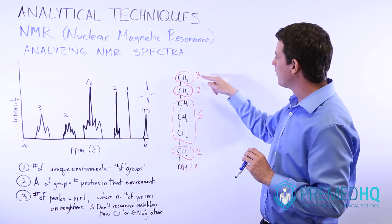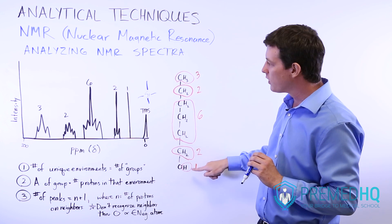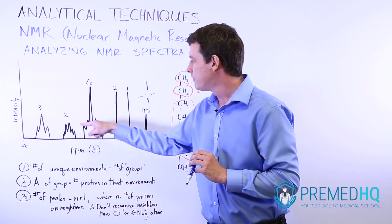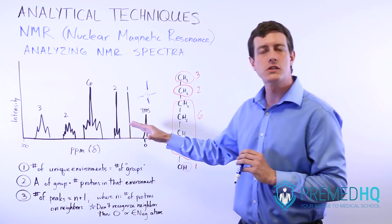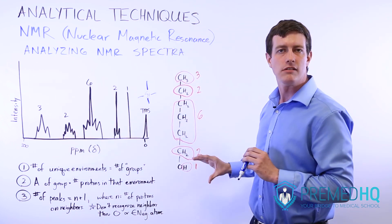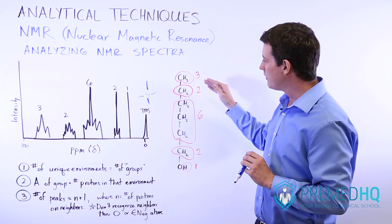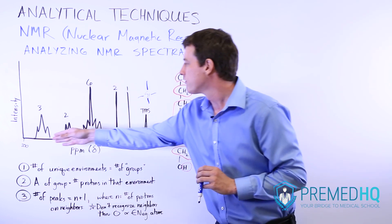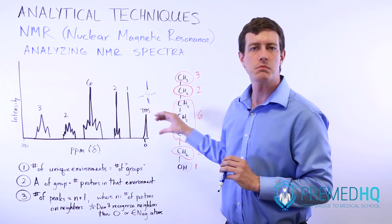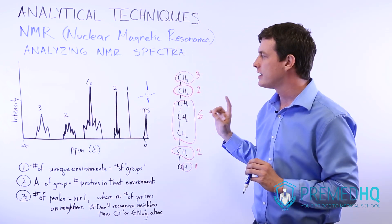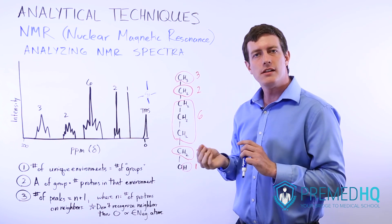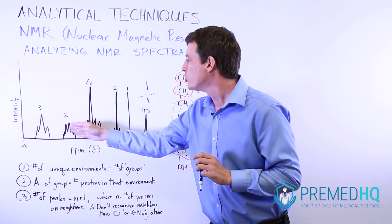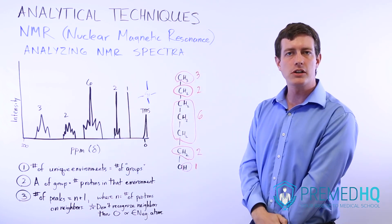We've identified five groups of peaks on the spectrum, and these five groups correspond with those unique proton environments. The number of unique proton environments correlates with the number of peak groups on your NMR spectra. So step one is identifying how many proton environments you have, and that will equal the number of groups of peaks that you see.